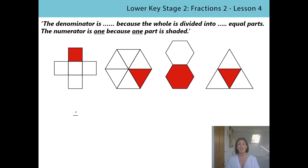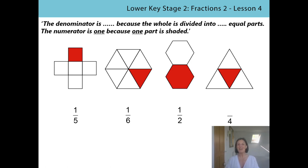Get your pen or pencil and as we go along and say the sentence, you can practise writing these fractions again. The denominator is five, because the whole is divided into five equal parts. And the numerator is one, because one part is shaded. The denominator is six, because the whole is divided into six equal parts. And the numerator is one, because one part is shaded. The denominator is two, because the whole is divided into two equal parts, and the numerator is one, because one part is shaded. The denominator is four, because the whole is divided into four equal parts, and the numerator is one, because one part is shaded.